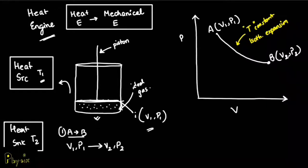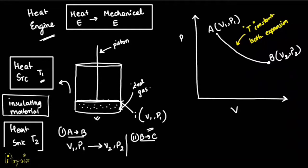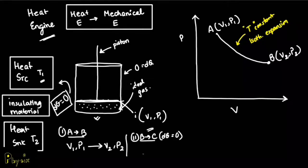Moving on to step 2. In step 2, it goes from state B to state C, where this engine is placed in an insulating material. Since this entire thing is placed in an insulating material, we can say that DQ, which means the transfer of heat from the surroundings to the system, is basically 0.